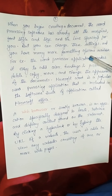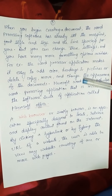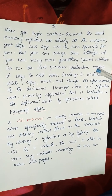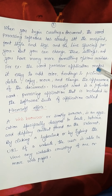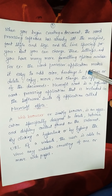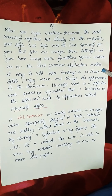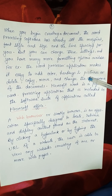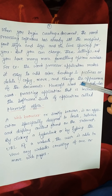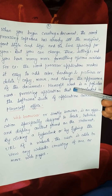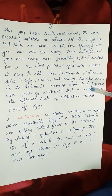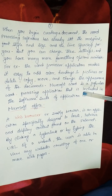When you create a document, you will find that the font size and line spacing are already set by the word processing software, but you can change these settings and you have many more formatting options available. For example, the word processor makes it easy to add color, headings, and pictures, or delete, copy, move, and change the appearance of documents.